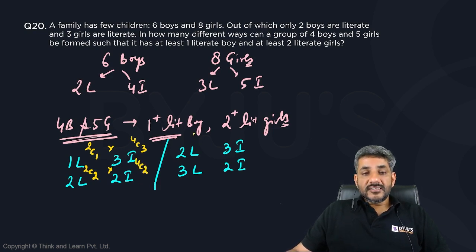Here, two literate girls out of three? 3C2. Three illiterate girls out of five? 5C3. Three literate girls out of three? That is 3C3. And two illiterate girls out of five? That is 5C2.